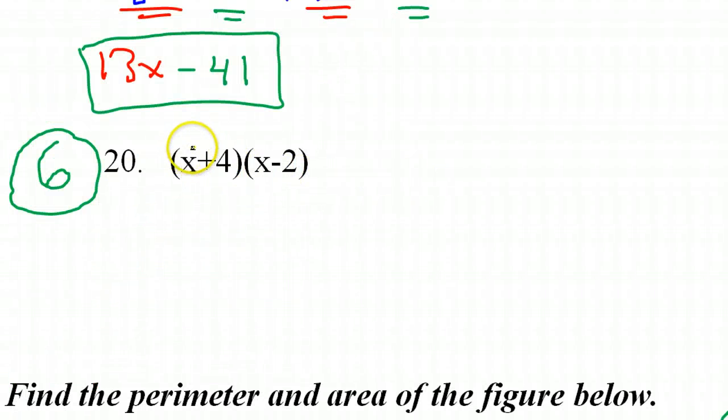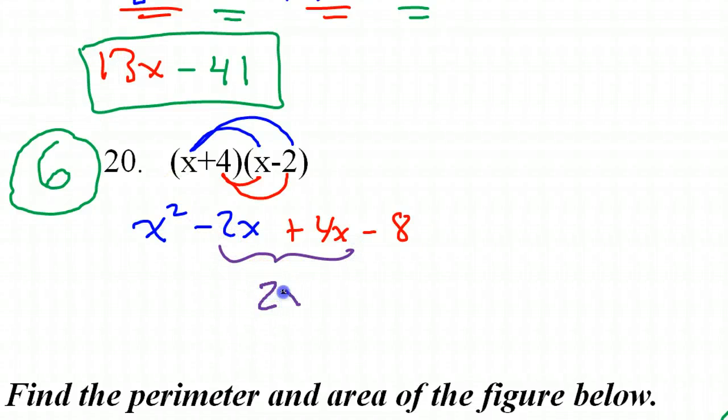Number 20. Got to do that double distributive property. 3x times x, x squared. x times negative 2, negative 2x. 4 times x, 4x. 4 times negative 2, negative 8. All right. Got to combine these like terms. So that makes 2x in the middle. So we'll have x squared plus 2x minus 8. And that's your answer number 20.